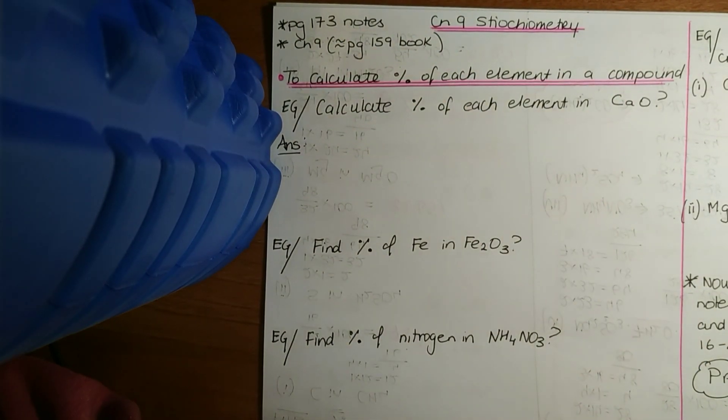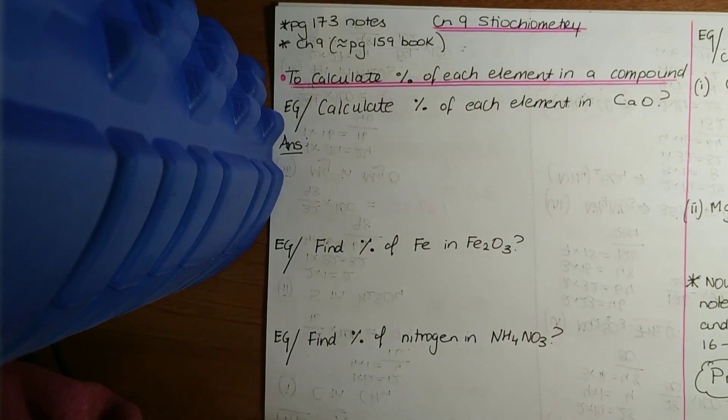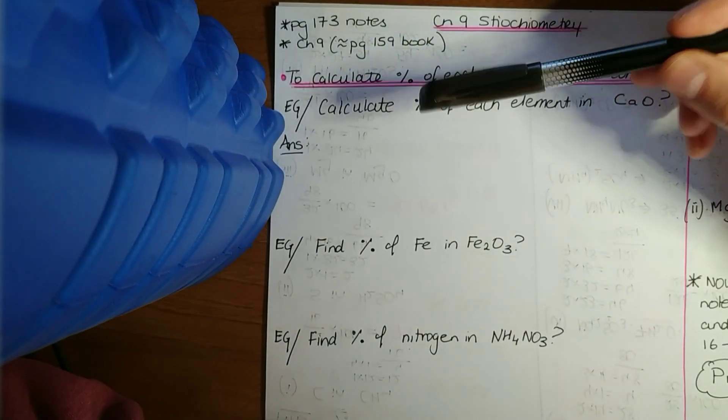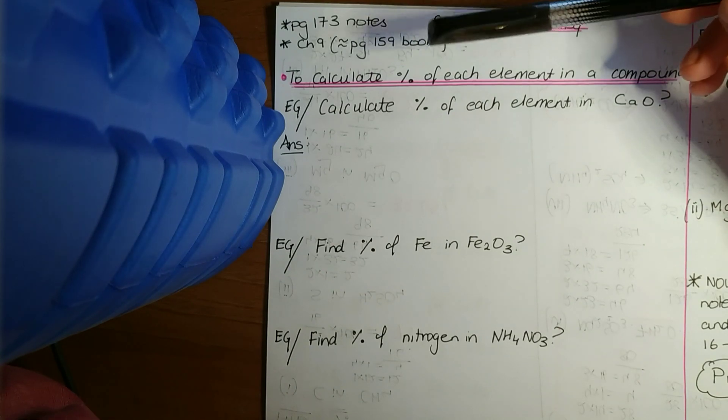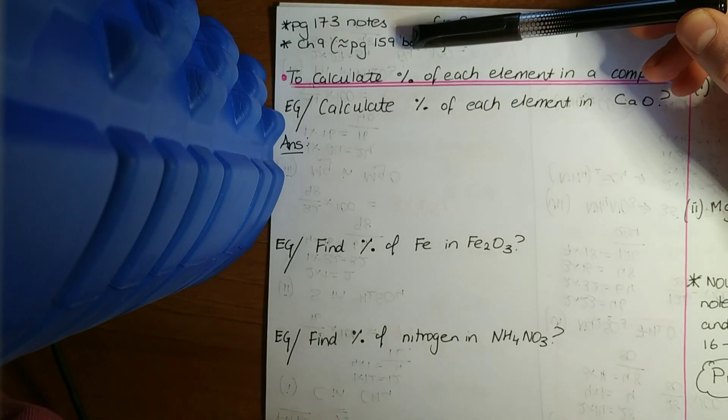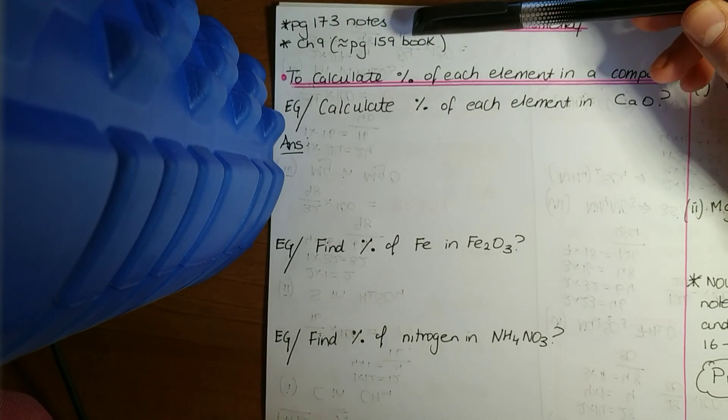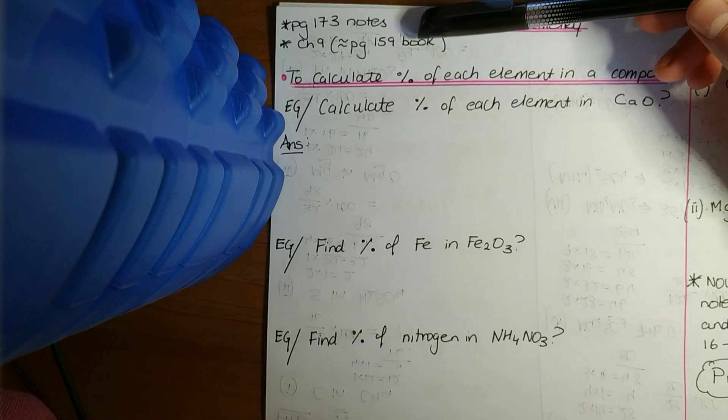So now we'll start looking at this thing known as stoichiometry. What I recommend you do in your textbook, it's chapter nine in Understanding Chemistry, and your notes - I can't remember if I handed these out to you, I'll send them on to you - page 173. Now if I send them on to you it'll be page one.